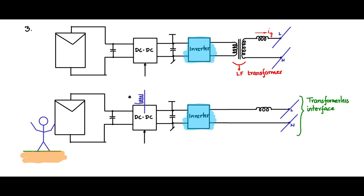In some topologies the transformer is shifted to the high-frequency portion, that is, into the DC-DC converter stage. A high-frequency transformer provides isolation there, giving a much more compact design compared to the heavy, expensive LF transformer. Let us briefly look at how this DC-DC converter with HF isolation looks.